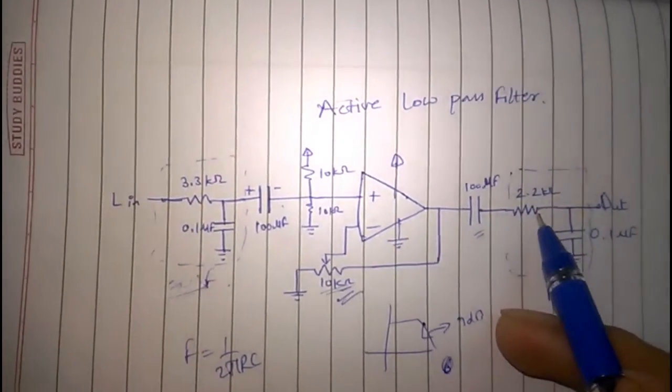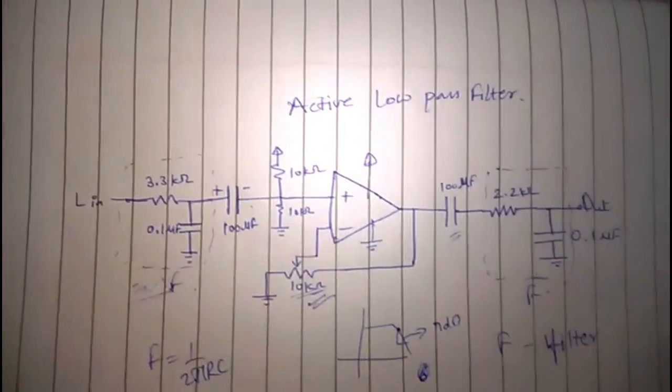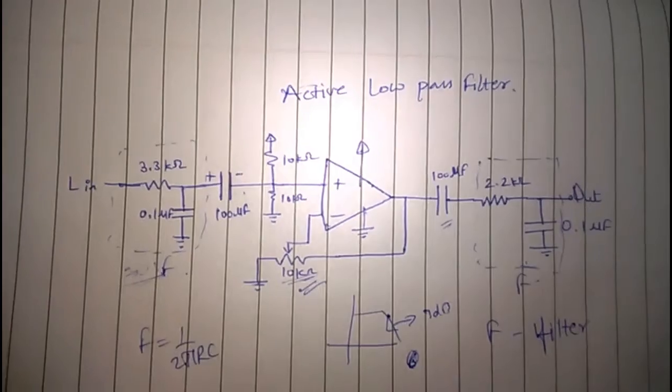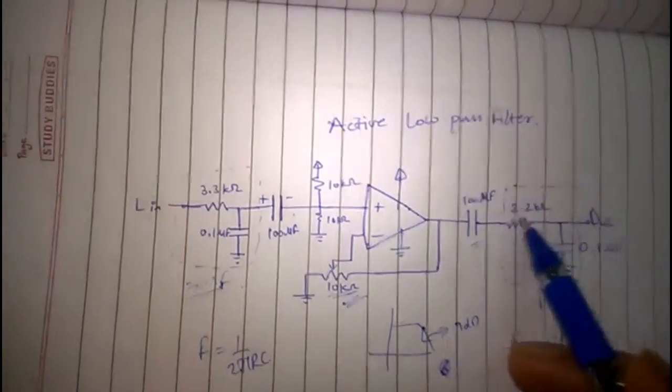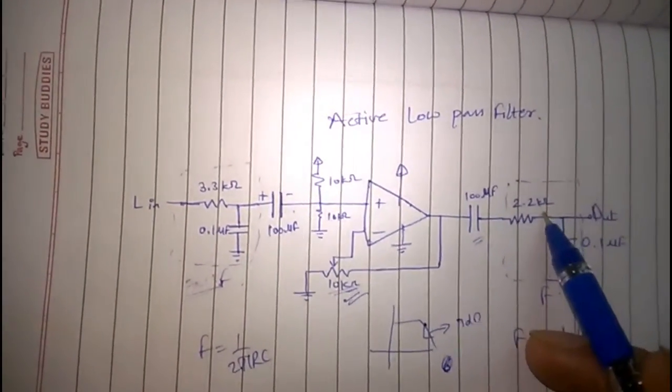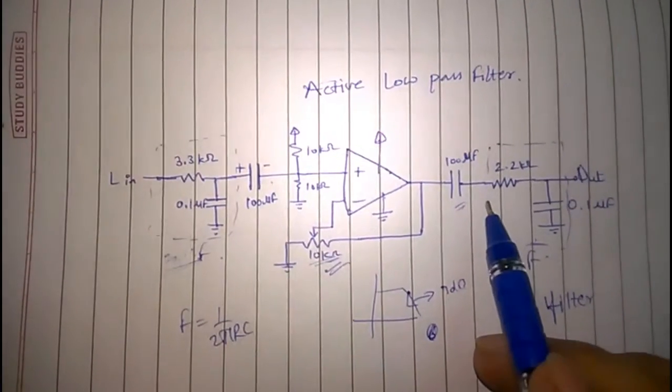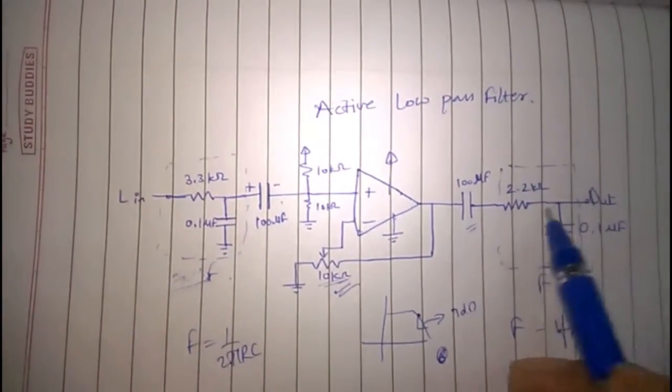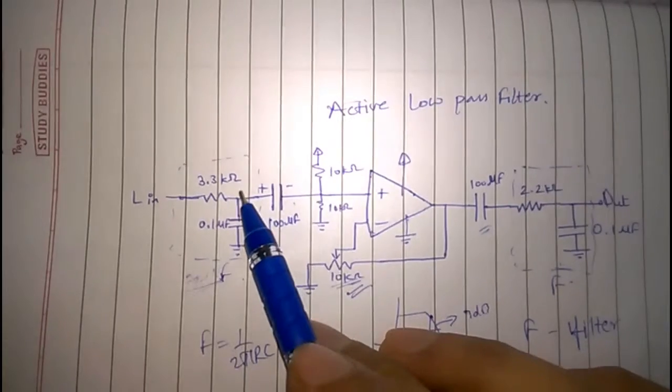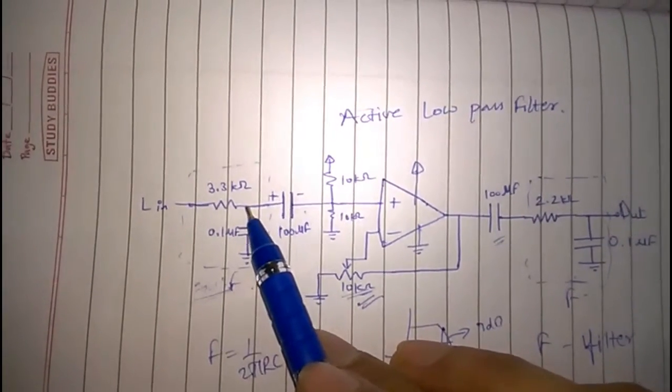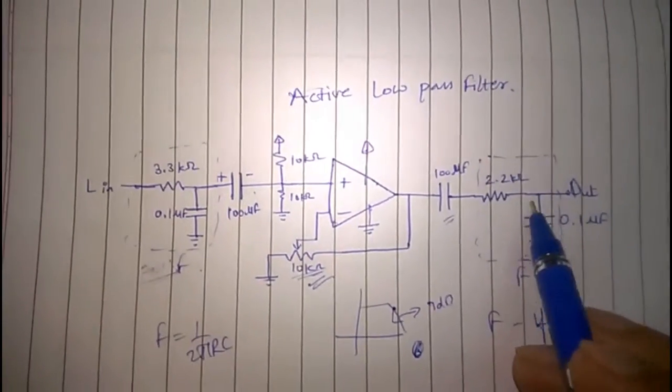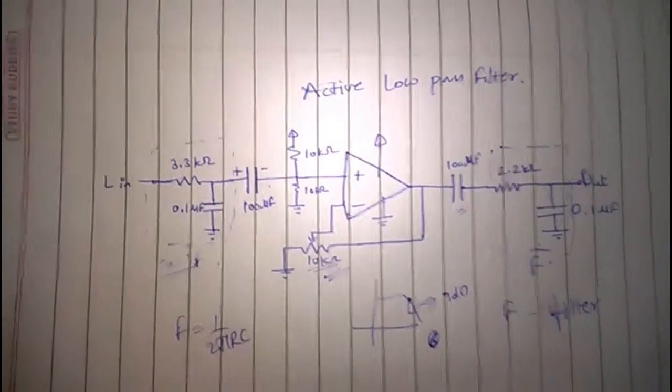6 dB would have been the case if this resistor was 3.3 kilohm, because then the cutoff frequency would have been exactly the same. But as I told you, I prefer to let some high frequency pass over here and then shunt it over here.